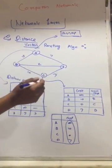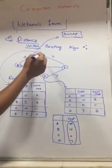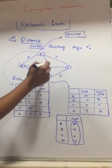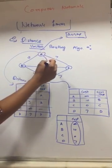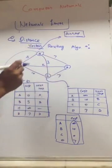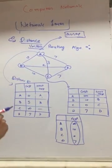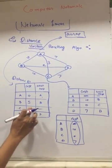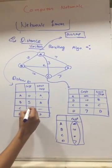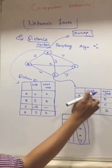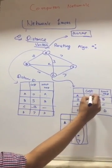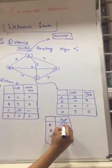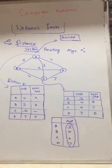Let's say there is one direct connection between A and C with a cost of 3. When C shares its distance vector with A, A will add the cost of the direct link from A to C (which is 3) to each of C's reported distances. These computed values will then be compared against A's existing routing table values to determine the minimum cost paths.